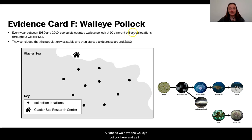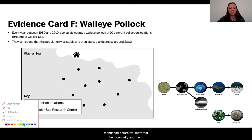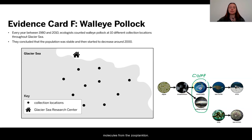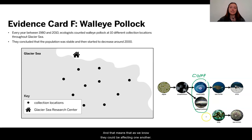So we have the walleye pollock here. As I mentioned before, the moon jelly and the walleye pollock are in competition. They both are getting energy storage molecules from the zooplankton, and that means they could be affecting one another. Let's take a look at what the evidence is showing us.